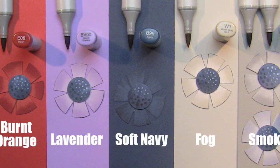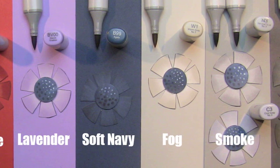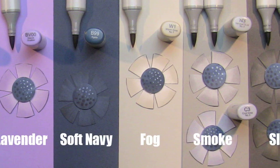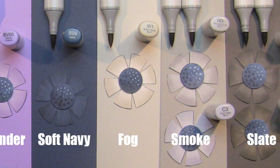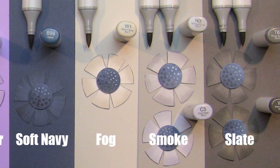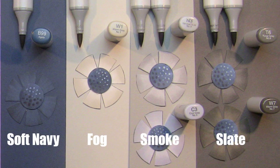Lavender BV00, soft navy is a perfect match for B99. All of this is going to be on the blog by the way. Fog matches W1 perfectly. The smoke and slate get into something a little different. The perfect color for smoke is N3 the neutral, and for slate it's T toner 6.